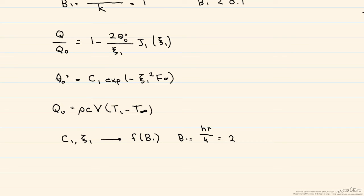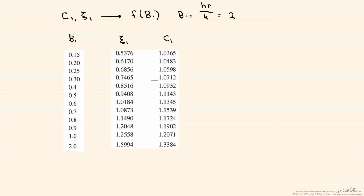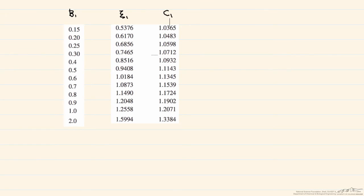So let's take a look at the table and see what our C1 and our eigenvalue are. So here I copied part of a table. If we look it up with a Bi number of 2, what we find is that our eigenvalue is equal to 1.5994, and our constant is equal to 1.3384. And take a look at the difference we would have gotten if we used the incorrect Bi number.